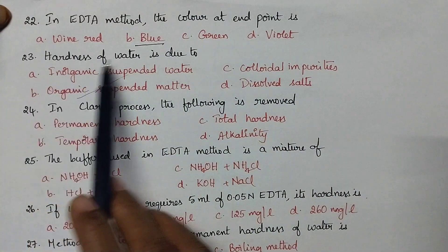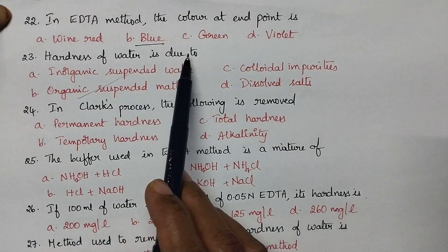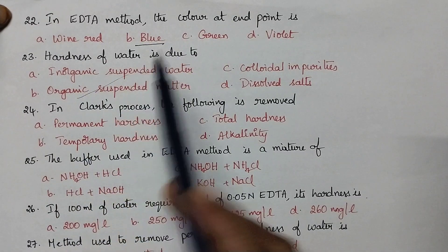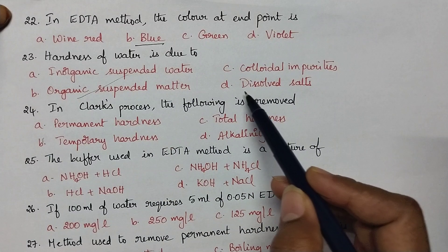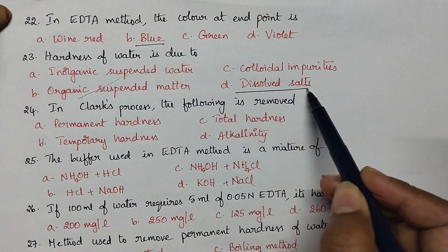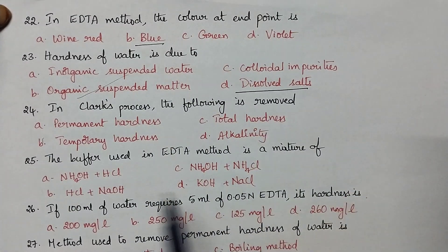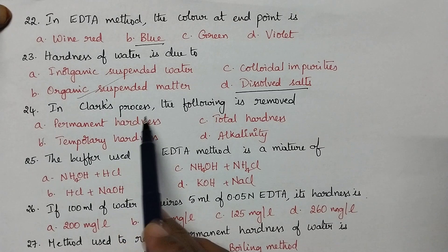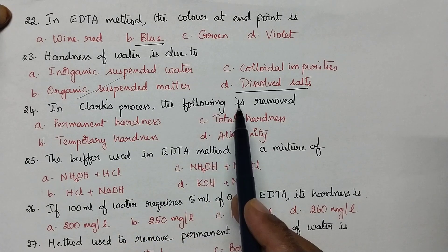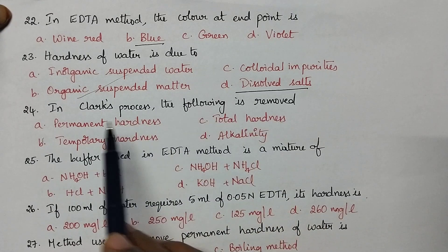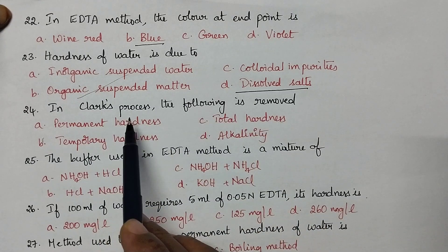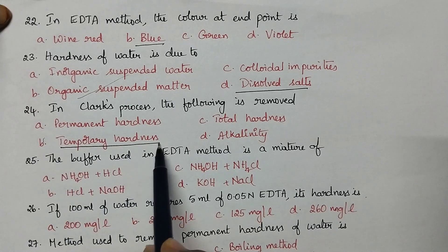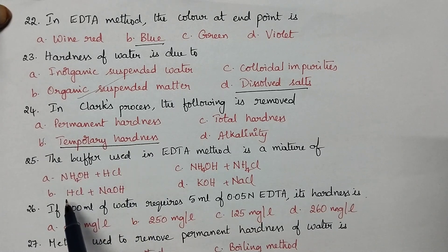Hardness of water is due to the presence of dissolved salts of calcium and magnesium. In the CLOCKS process, temporary hardness is removed.